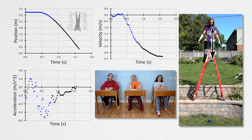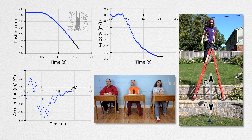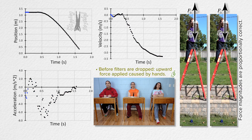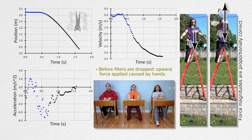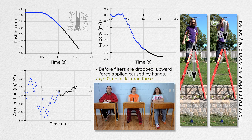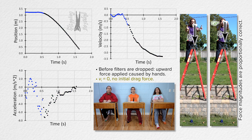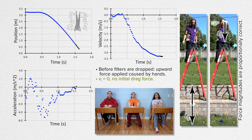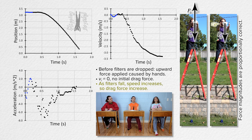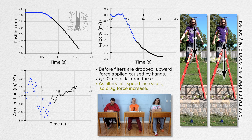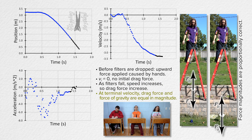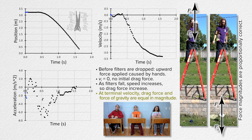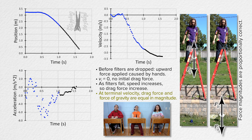Let's look at the forces acting on the filters as they fall. Before dropping the filters, a force is applied upward. As soon as you let go, that applied force disappears and the initial speed is zero, so there is no force of drag right when you drop them. As the filters fall, their speed increases and therefore the force of drag increases until the magnitudes of drag and gravity are equal right before the coffee filters hit the ground.